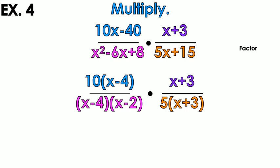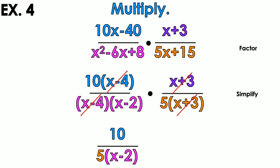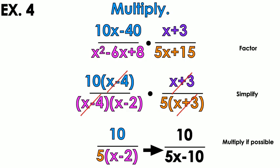Now that everything is factored, I look for common factors to cancel. x minus 4 over x minus 4 — cancel it. x plus 3 over x plus 3 — cancel it. What's left: on top I have the 10, and on the bottom I have a 5 and x minus 2. Multiply: 10 over 5 simplifies to 2, giving a final answer of 2 over the quantity x minus 2.